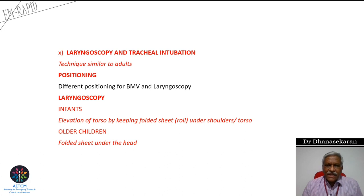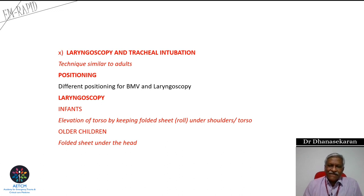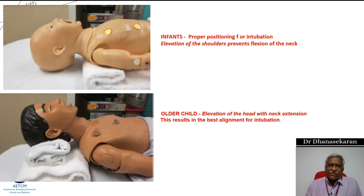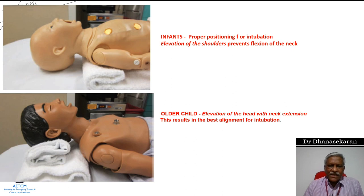For laryngoscopy and tracheal intubation, positioning is critical. In infants, a roll should be kept under the torso/shoulders, because the large occiput causes neck flexion in the supine position, obstructing the airway. For older children, the roll should be under the head. The legs should be slightly extended. The epiglottis may be long and obscure the view, so use a straight blade to lift it directly.